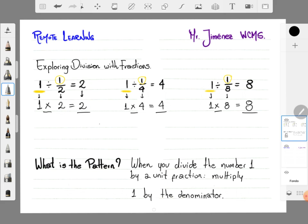That's it. Again, if you multiply 1 times 2, this is 2. 1 times 4, this is 4. And 1 times 8, this is 8.